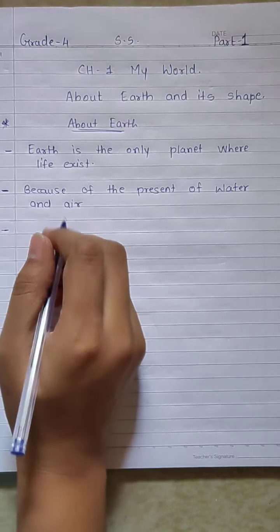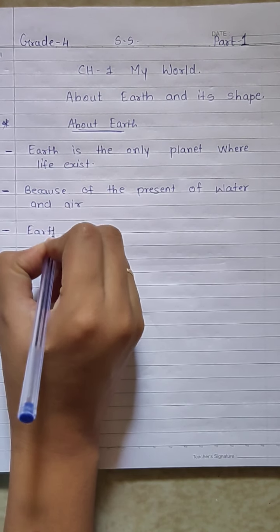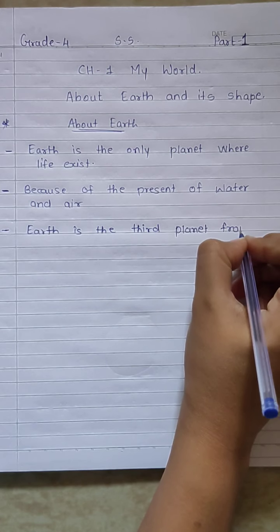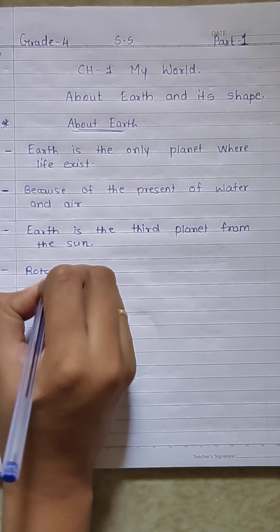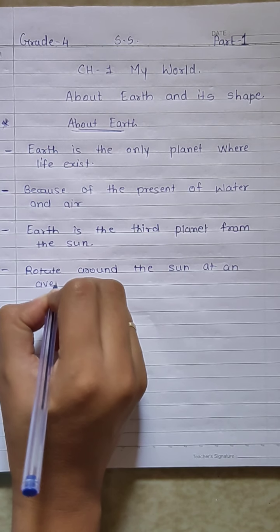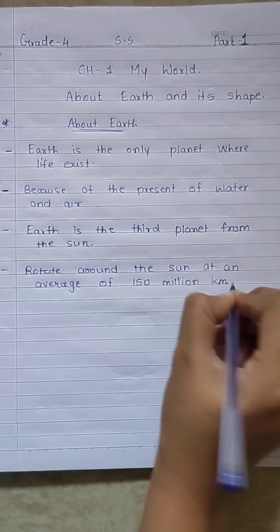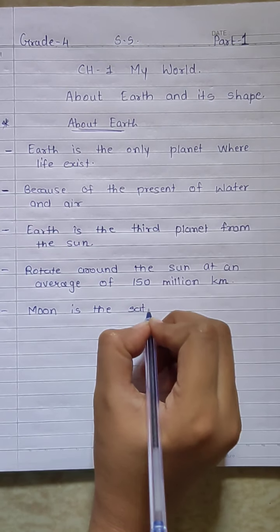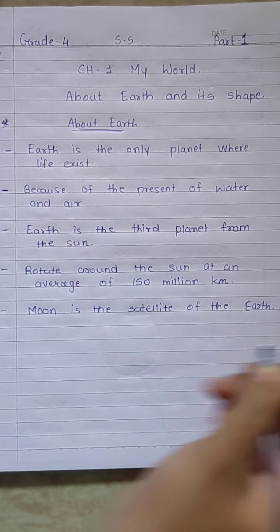Next, earth is the only planet where life exists and it is unique. Then earth is the third planet from the sun and it rotates around sun at an average of 150 million kilometers. Moon is the natural satellite of the earth.